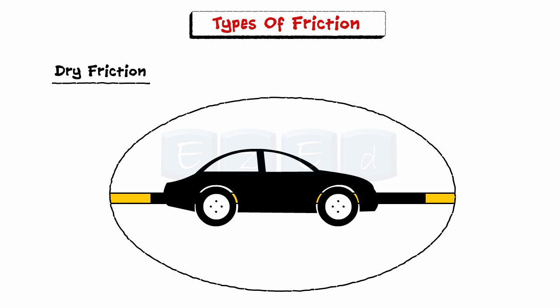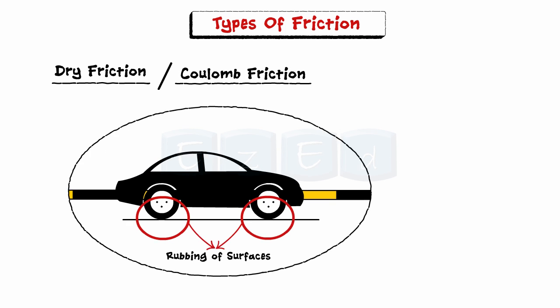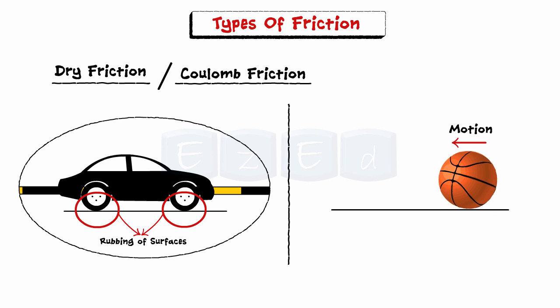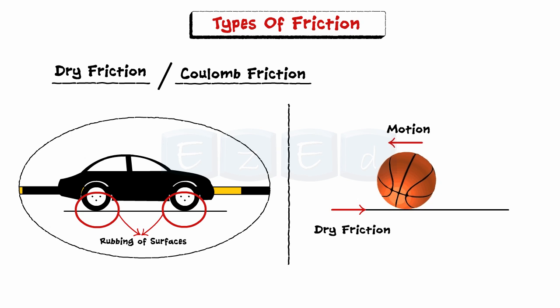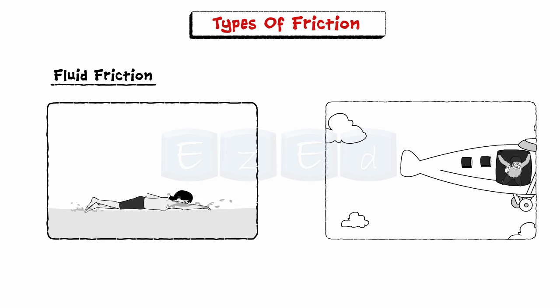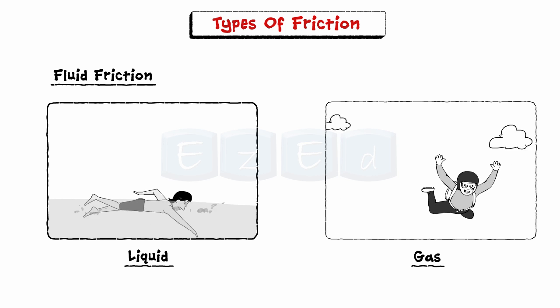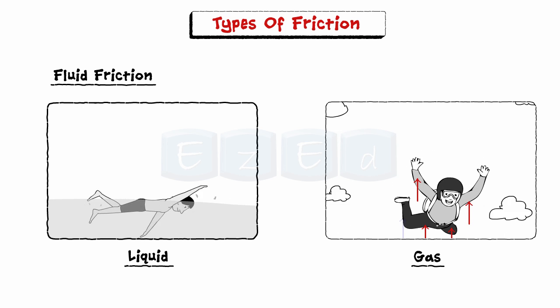The main types of friction are as follows. Dry friction occurs when un-lubricated surfaces of two rigid bodies are in contact under a tendency of rubbing of surfaces. This type of friction is also called Coulomb friction. A ball rolling on the ground is an ideal example of dry friction. In our course, we will only be studying about dry friction. Fluid friction occurs when an object moves through a fluid, meaning either a liquid or gas. Examples of fluid friction are skydiving and swimming.